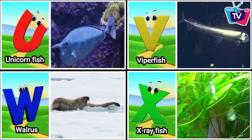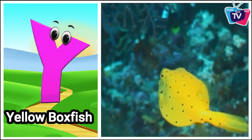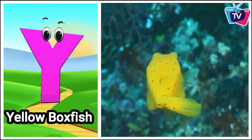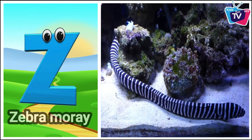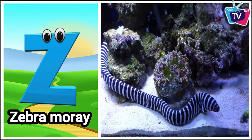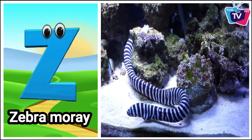Y is for yellow box fish. Z is for zebra moray.